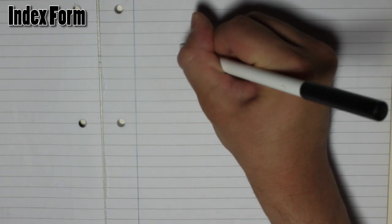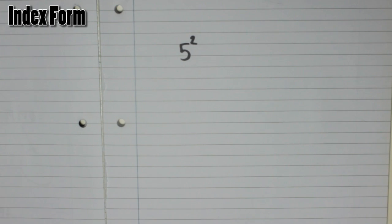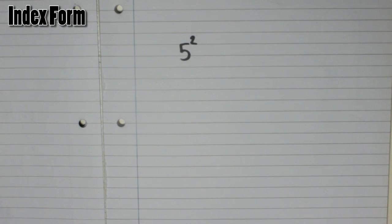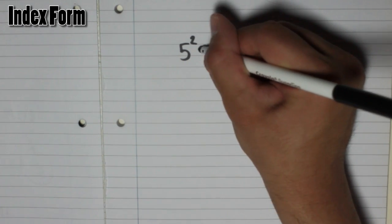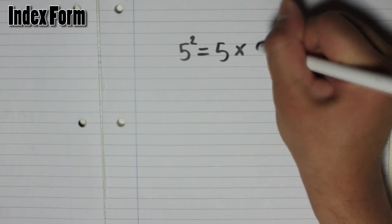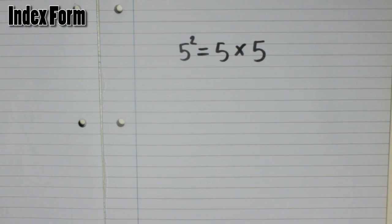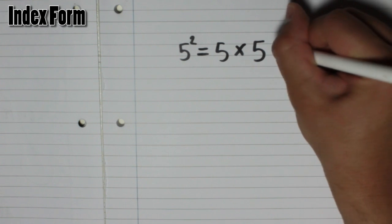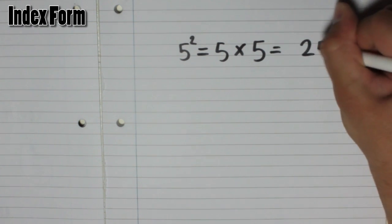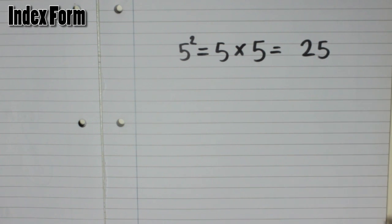For example, if we have a normal sized 5 and I put a little 2 on it, you might know that that means 5 squared. It means that we are going to take 5 and multiply it by itself — 5 times 5. So 5 times 5 is 25, meaning 5 squared is 25.